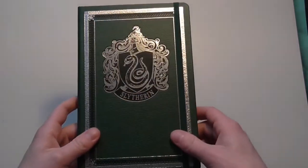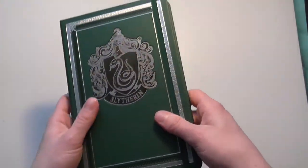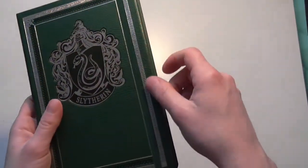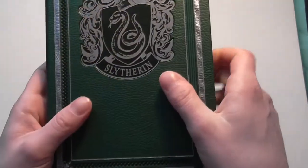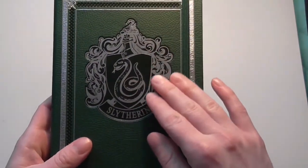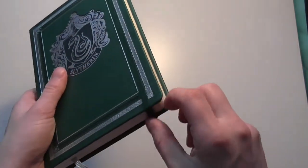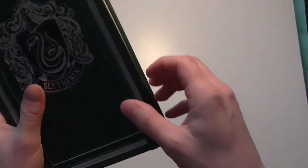Lastly you have this Slytherin notebook which is bound in green and silver with the Slytherin symbol imprinted on the front and it has a green elastic band around it.